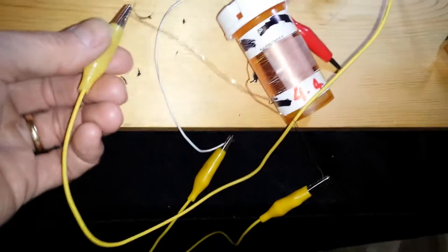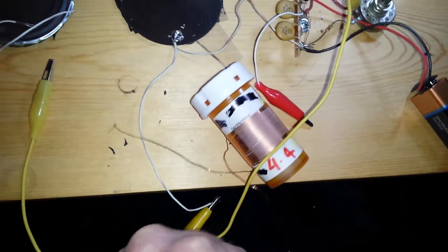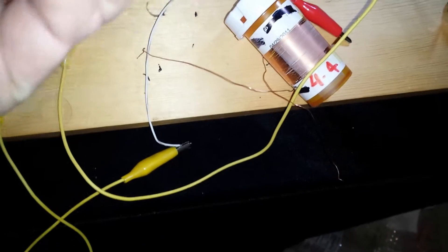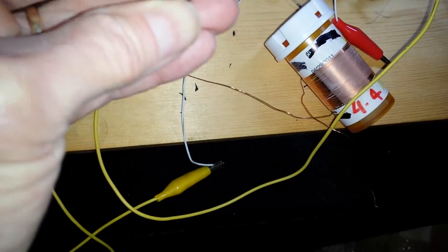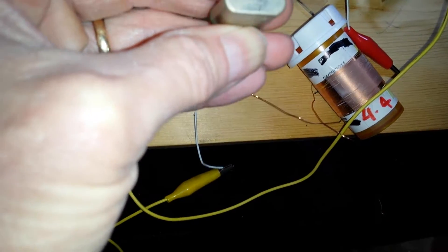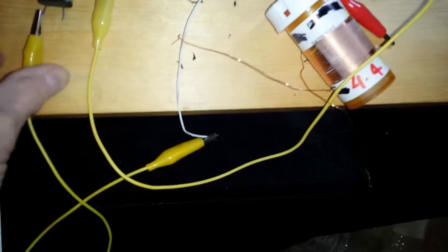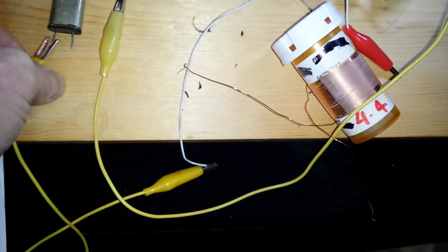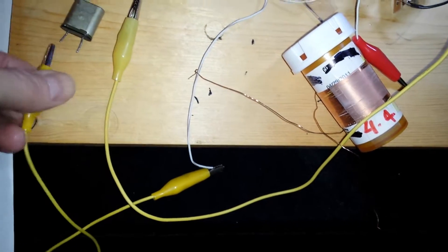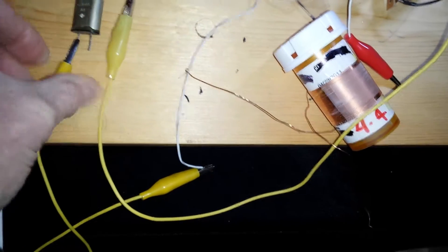By removing the coil and inserting this 3.579 megahertz color burst crystal, it converts back to a crystal control Colpitts oscillator that will pull slightly.